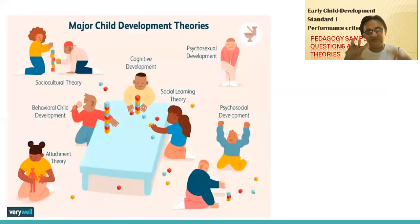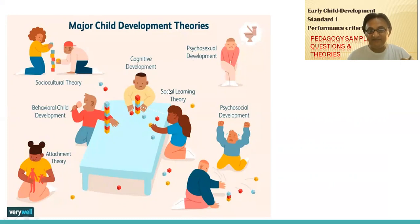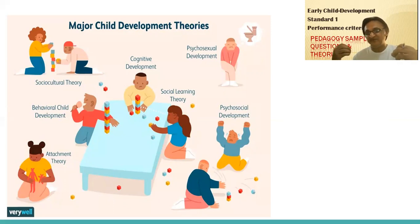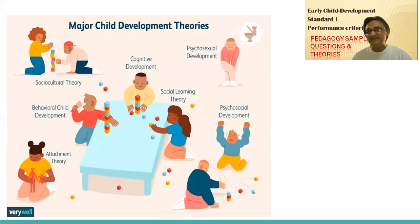Let's go to the first thing: what are these theories? There are seven major child development theories. Number one: psychosexual development; cognitive development; social learning theory; psychosocial development; sociocultural theory; behavioral child development; and attachment theory. These are the most important theories. In this lesson, I'm going to talk about the behavioral child development theory. These theories relate to emotional and brain activity, social interaction, the cycle of children's understanding at each stage, the role of learners and instructors, and the role of environment and atmosphere in children's development.